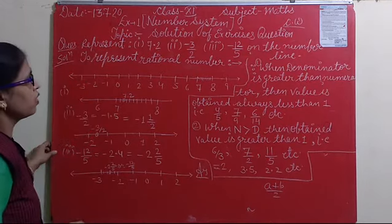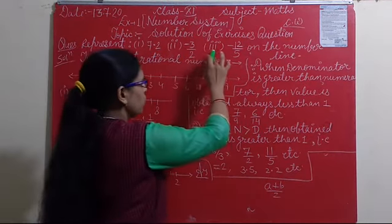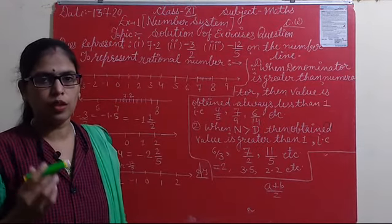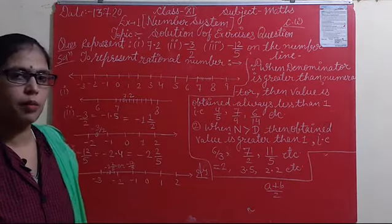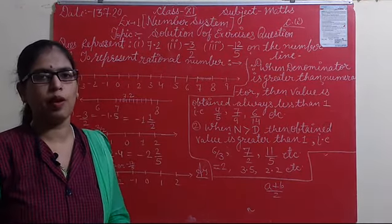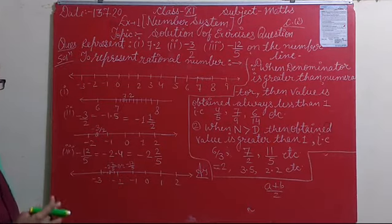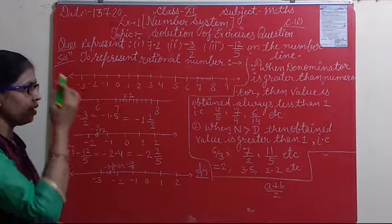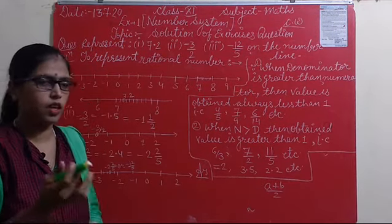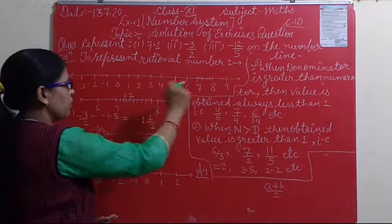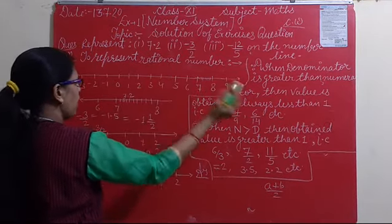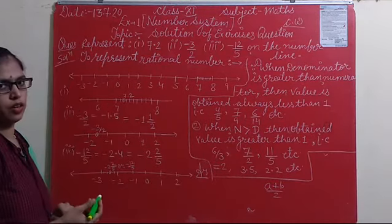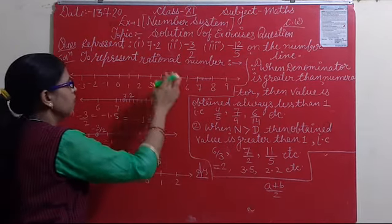The first question is: represent 7.2, minus 3 by 2, and minus 12 by 5 on the number line. These 3 numbers are going to be represented on the number line, with digits on the left-hand side and right-hand side. Left-hand side has negative numbers and right-hand side has positive numbers.